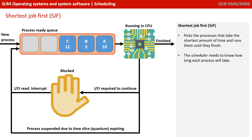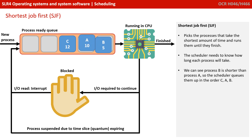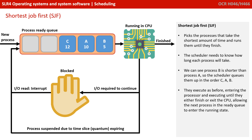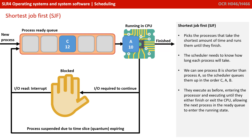The next algorithm is shortest job first. This picks the process that takes the shortest amount of time and runs it until it finishes. For this to work, the scheduler needs to know how long each process is going to take. We can see Process B is shorter than Process A, so the scheduler queues them up in the order C, A, B. They execute as before, entering the processor and executing until they either finish or exit the CPU, allowing the next process in the queue to enter the running state.